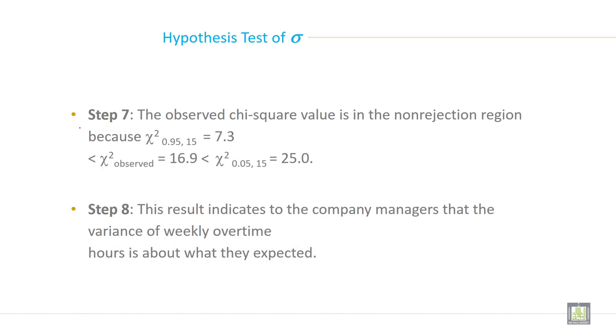So go to step 7. The observed chi-square value is in the non-rejection region because the lower critical value is 7.3, the observed chi-square is 16.9, and the upper critical value is 25.0.